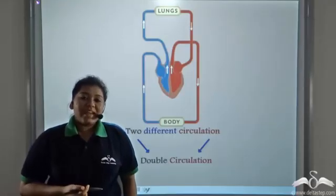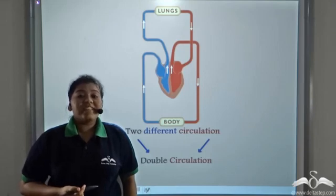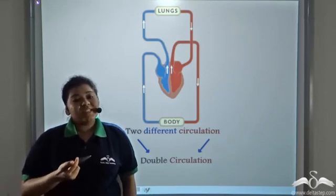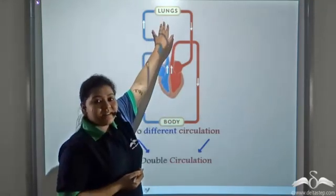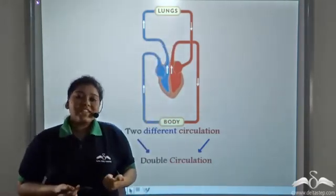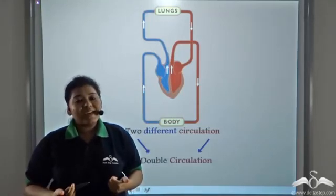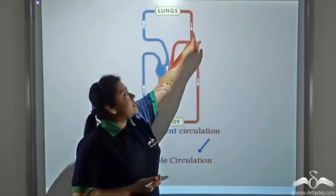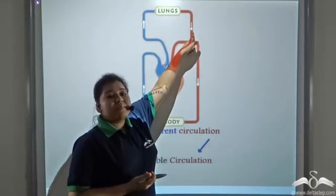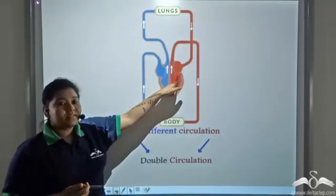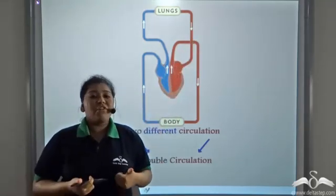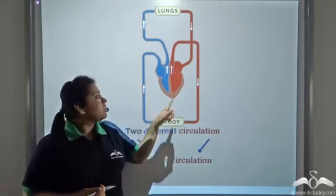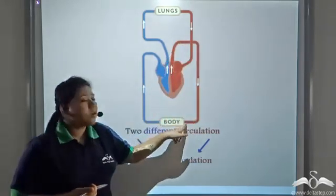We know that we take in air that is rich in oxygen. This oxygenated air reaches the lungs. Now the oxygen diffuses out of the alveoli into the blood vessels. These blood vessels then take this oxygenated blood to the heart. The heart is the pump of the body, so it pumps this oxygenated blood to the various body parts.